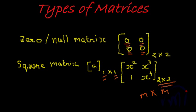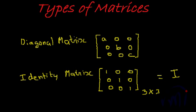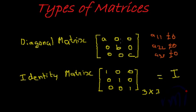Then we have a diagonal matrix. A diagonal matrix has nonzero elements only on the diagonal. Looking at the given matrix, only the diagonal elements a₁₁, a₂₂, and a₃₃ are nonzero, whereas all other elements — where the row and column indices are not equal — are zero. Such a matrix is called a diagonal matrix.